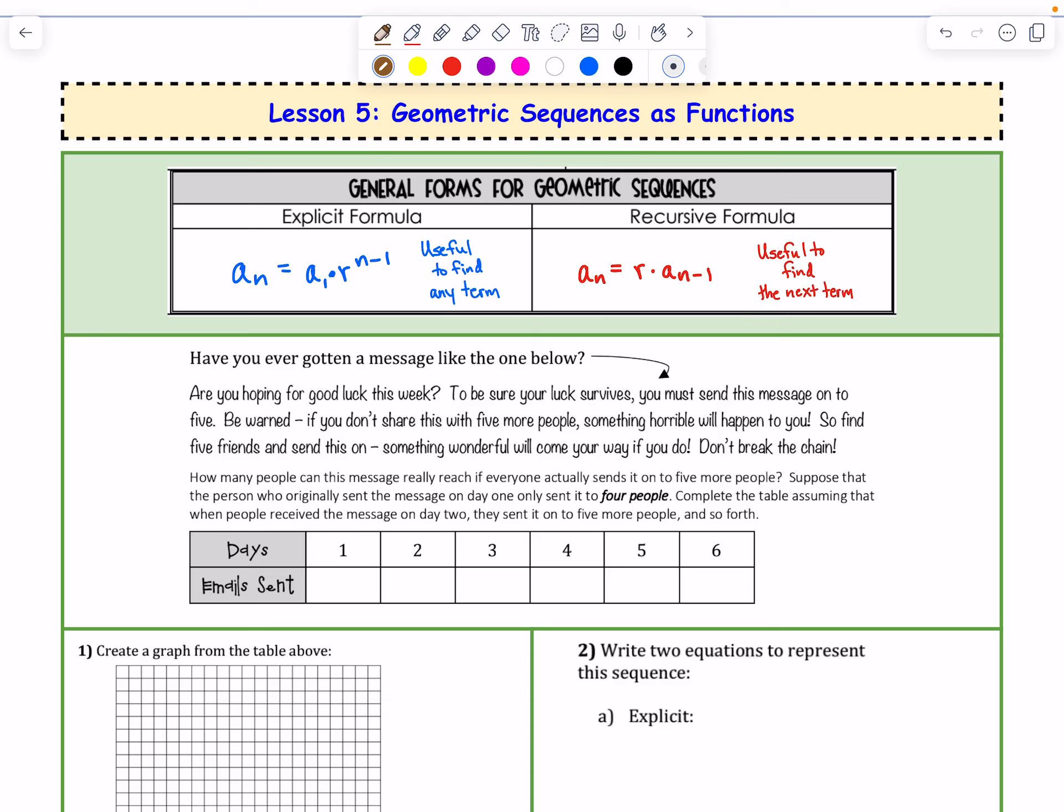In this video, we're going to take a look at geometric sequences as functions. The explicit formula for a geometric sequence is a sub n equals a sub 1, which is our first term, times the common ratio r to the power of n minus 1. This is always useful for finding any term in the sequence if we know the common ratio r and the first term. The recursive formula is a sub n equals the common ratio r times the previous term in the sequence, which is a sub n minus 1, and this one is useful for finding just the next term in the sequence. So let's look over our example and answer some questions.